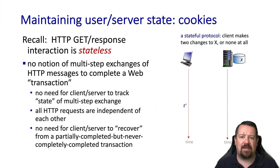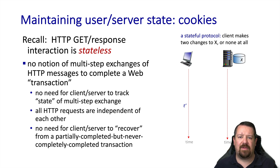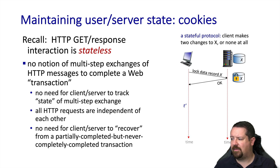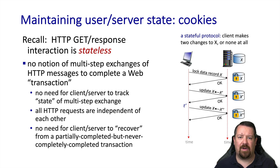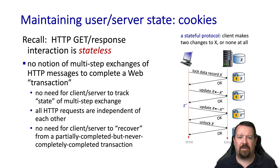Many web applications want to maintain some state, so let's see how that functionality has been added on top of the stateless HTTP protocol. In this example, the server side is maintaining information about the user in its database. The client tells the server to lock record X, the server acknowledges, and a lock is placed on the database — a change of state outside the HTTP protocol. The client follows up by updating X to X prime, then updating X prime to X double prime, and finally unlocks the record. All of these requests are independent of each other, i.e. stateless, but they result in changing state on the server side by higher-level application behaviors.